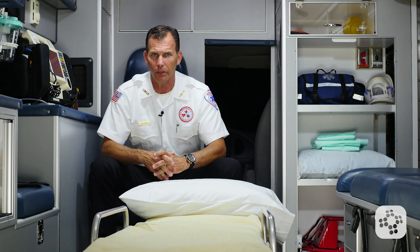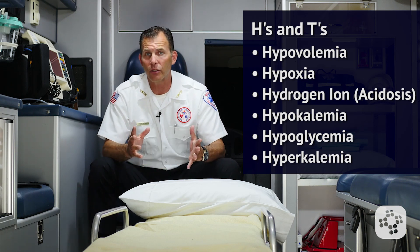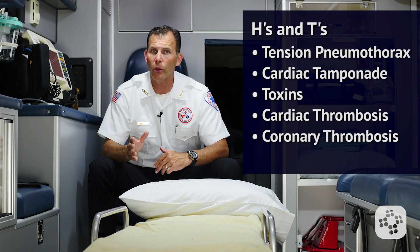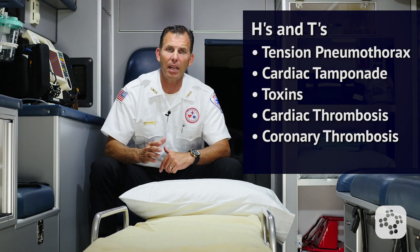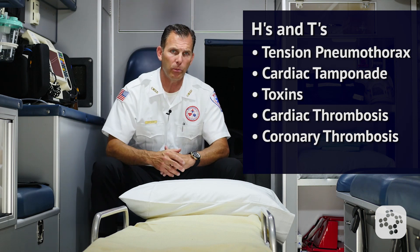Once initial treatments have been started, it's important to ask the team to help in considering potential causes of why this patient went into asystole. To do this, we should consider the reversible H's and T's. These include hypovolemia, hypoxia, hydrogen ion (which is acidosis), hypo- or hyperkalemia, tension pneumothorax, cardiac tamponade, toxins, cardiac thrombosis, or coronary thrombosis.